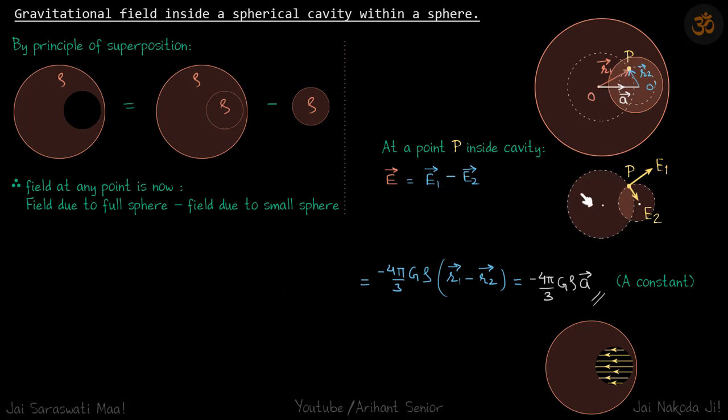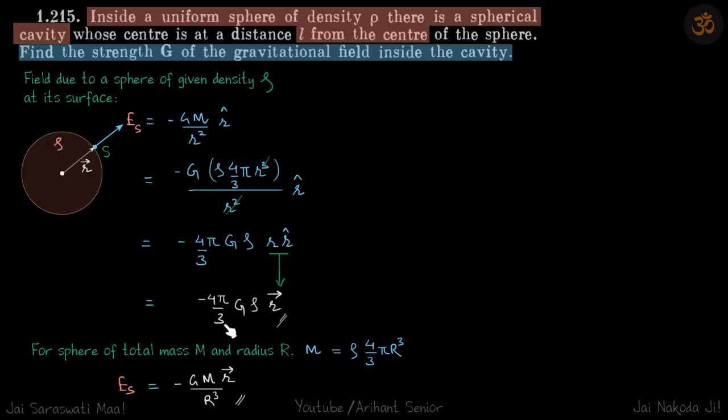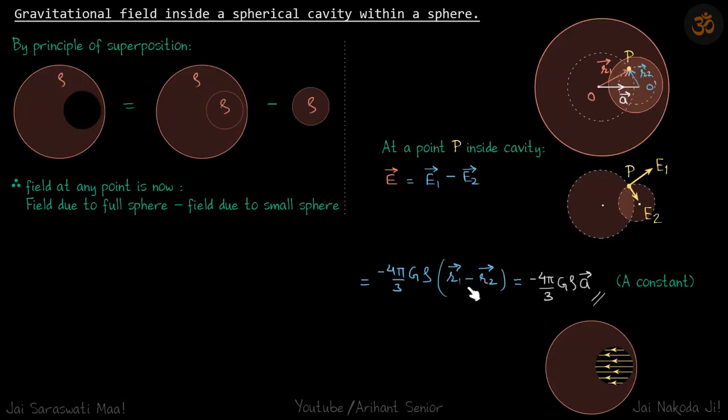And minus of this into r2 vector, where r2 vector is this. Now we can see r1 vector minus r2 vector is a vector. This simplifies and becomes minus 4 by 3 G rho a vector, which is a constant.